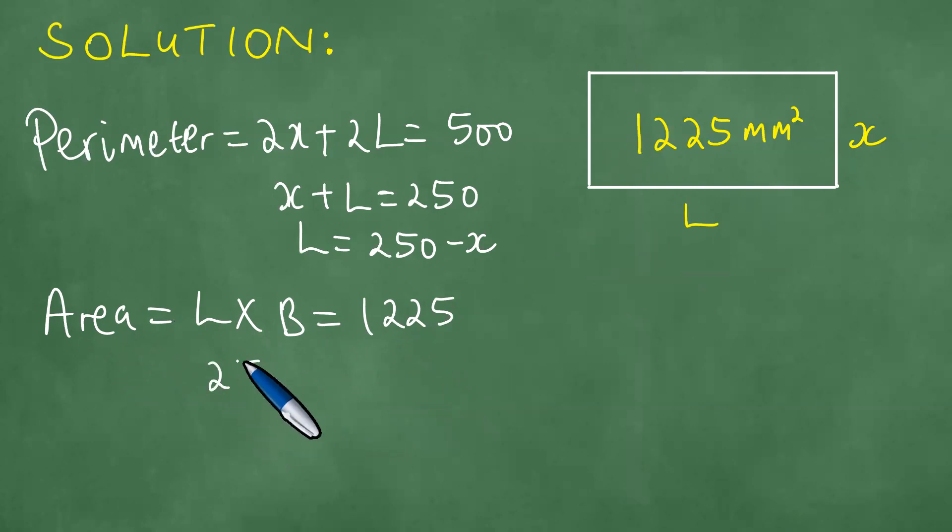Which means the length is 250 minus x multiplied by the breadth x equals 1225. And this is 250x minus x squared equals 1225. And this is what we get.